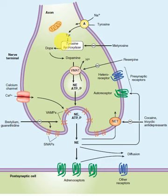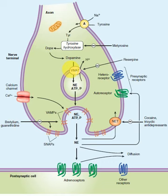The dopamine formed must be transported into the vesicles for storage. The transporter used here is called VMAT — the vesicular monoamine transporter — which transports dopamine into the vesicles.